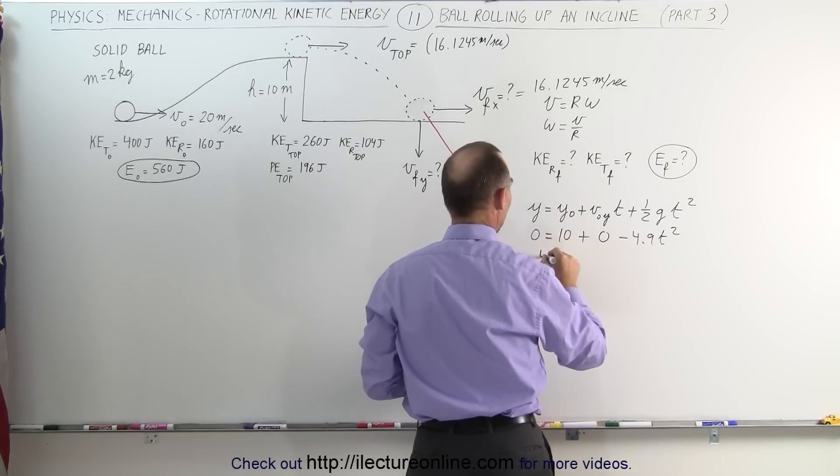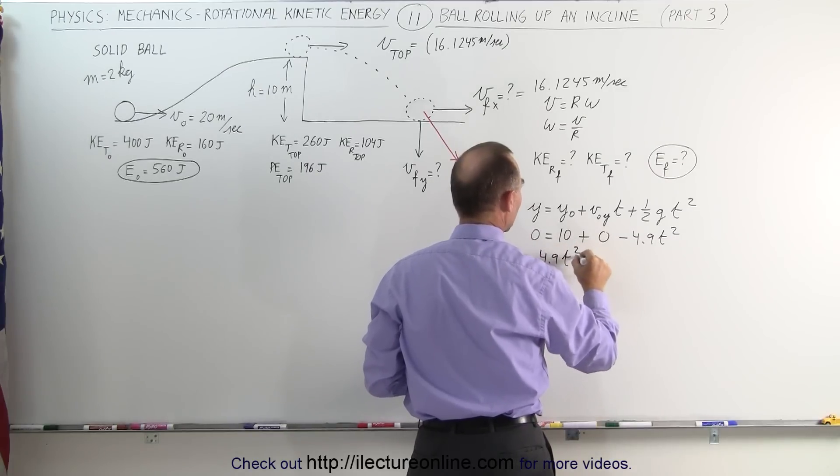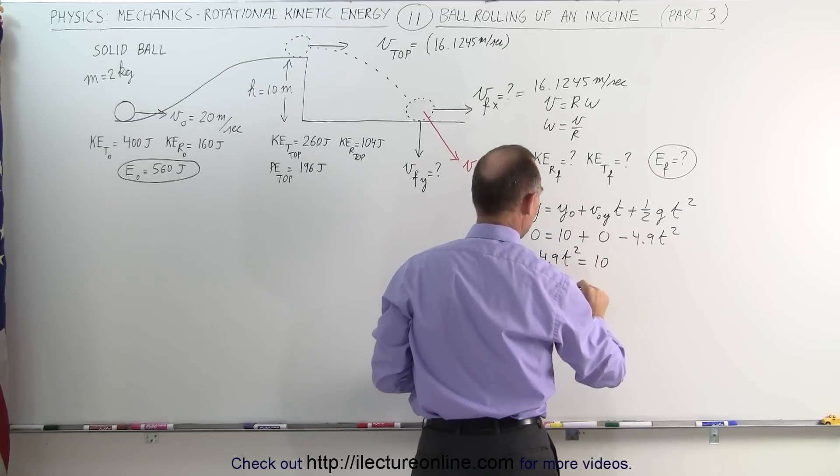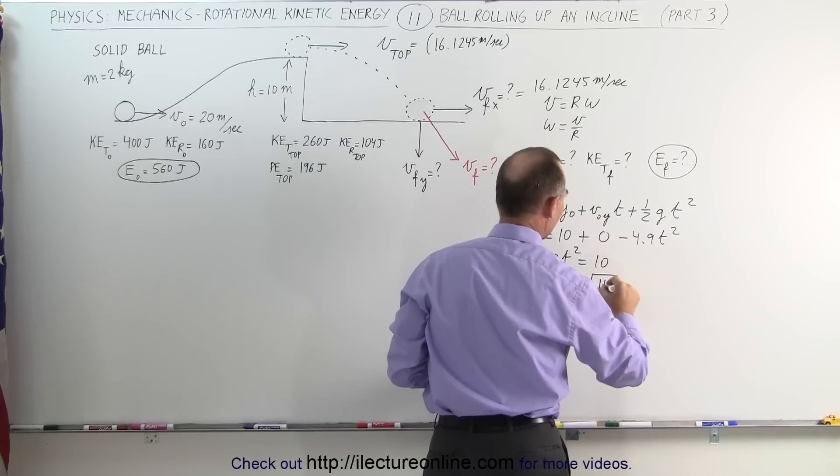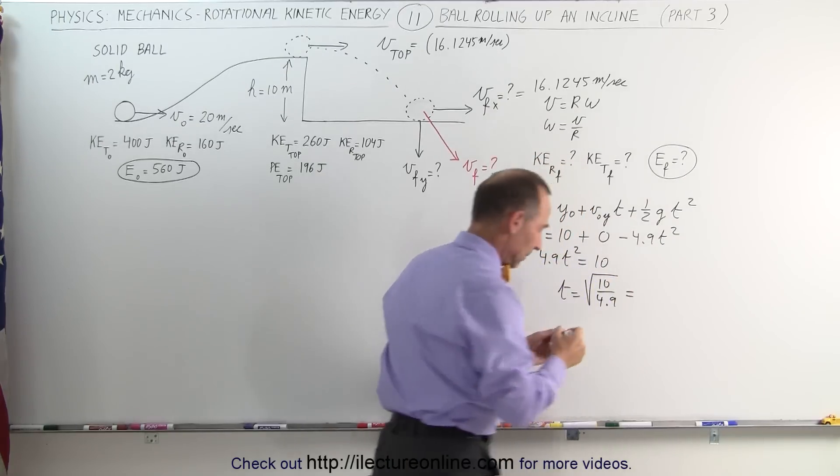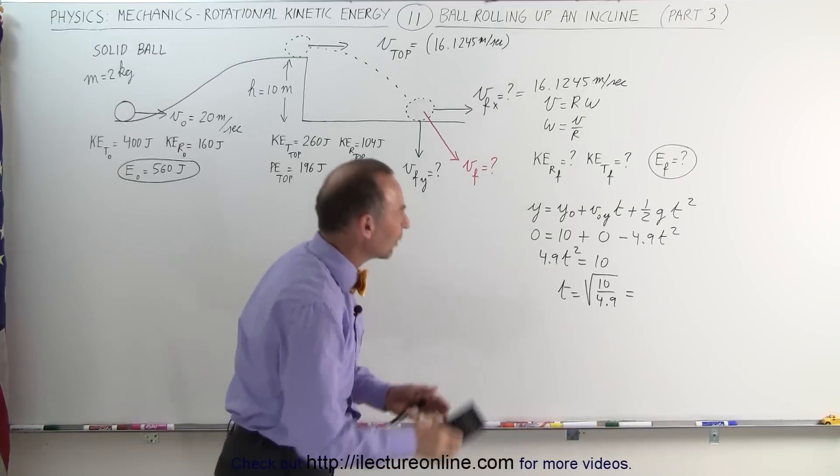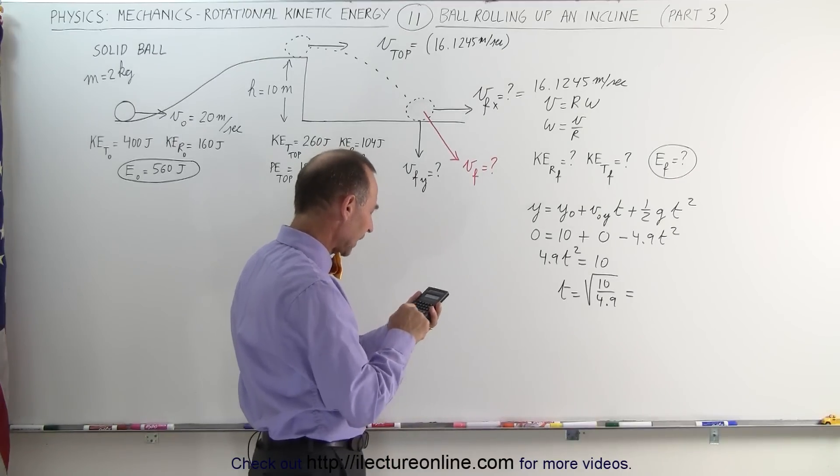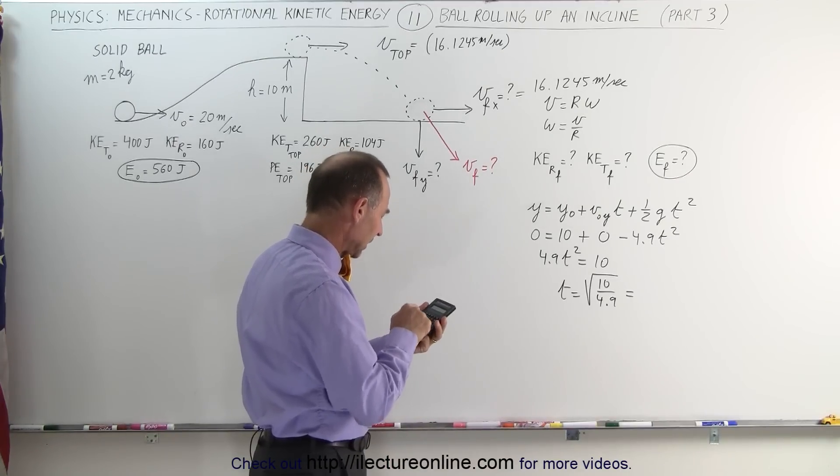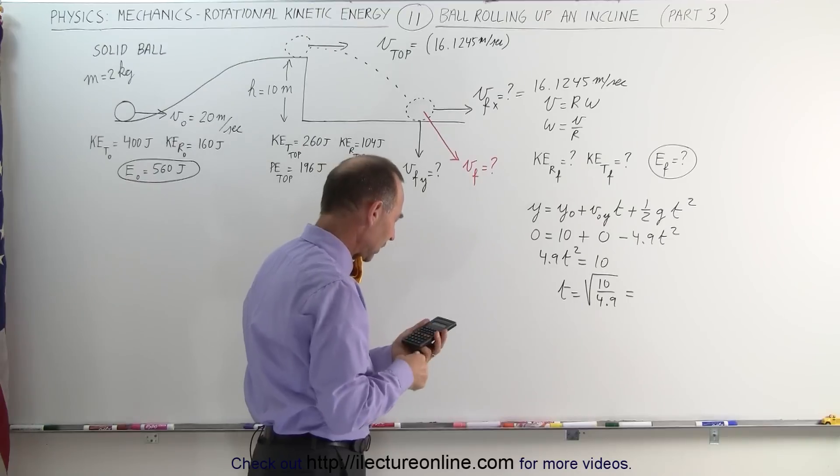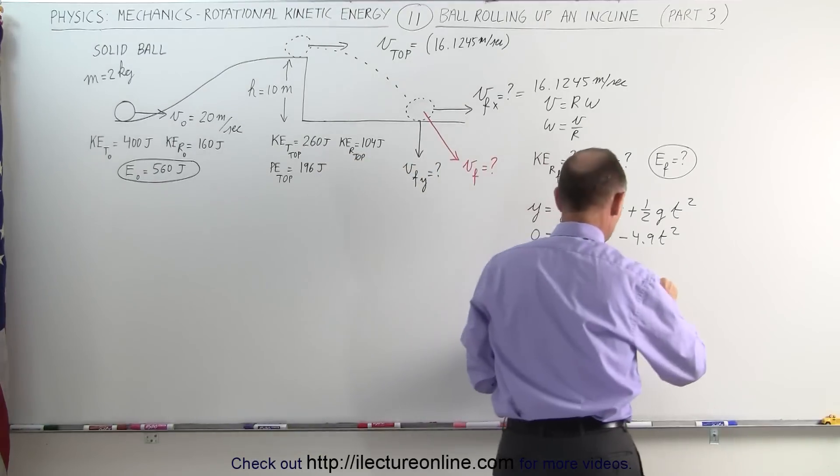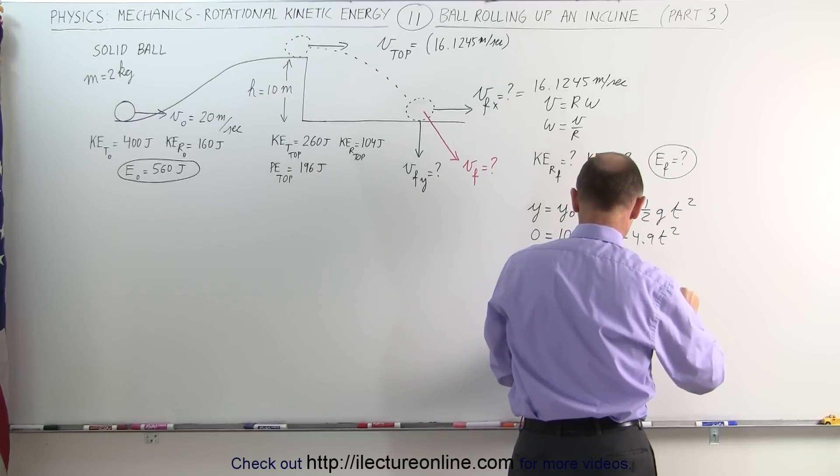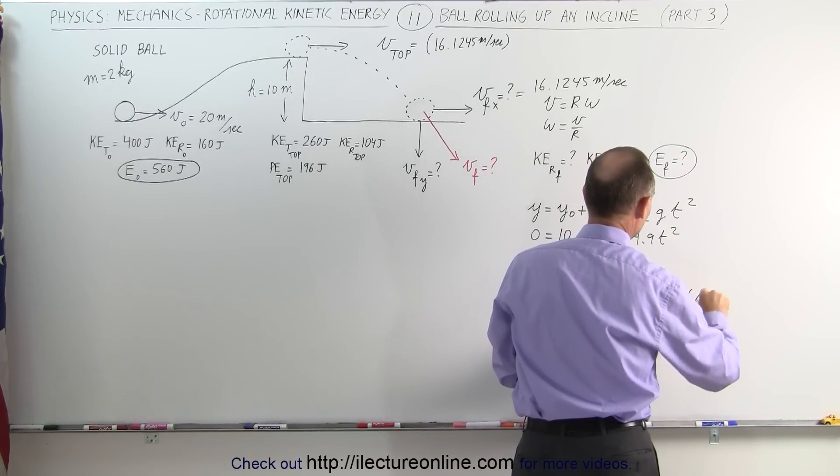Moving this to the other side, we have 4.9 t squared is equal to 10, or t is equal to the square root of 10 divided by 4.9. With a calculator, let's find out what that's equal to: 10 divided by 4.9, take the square root of that, and we get 1.4286 seconds.